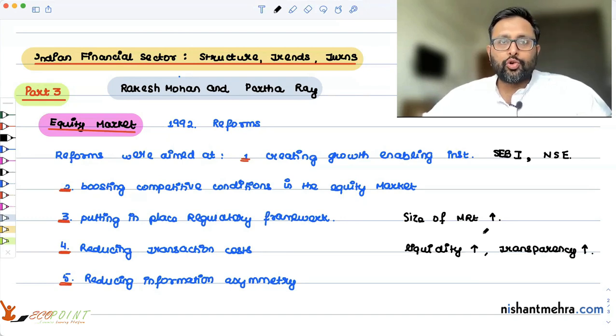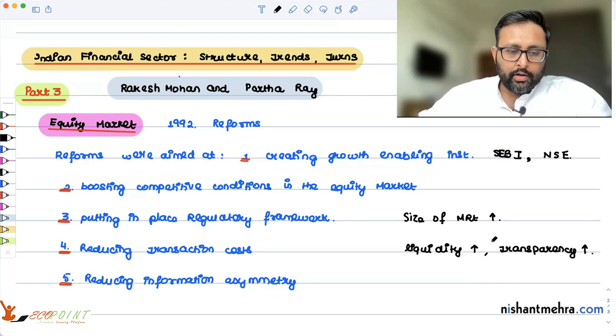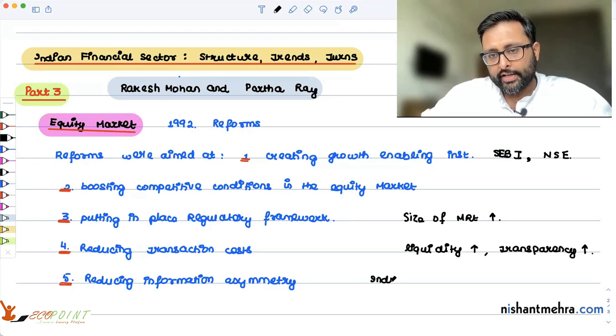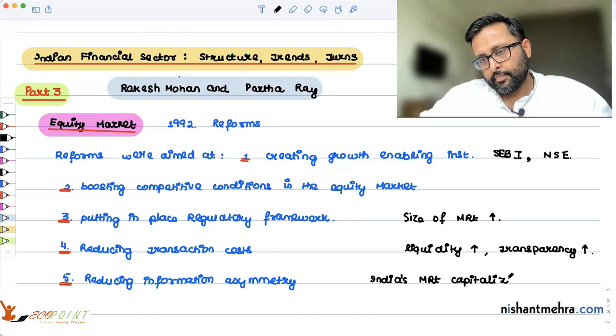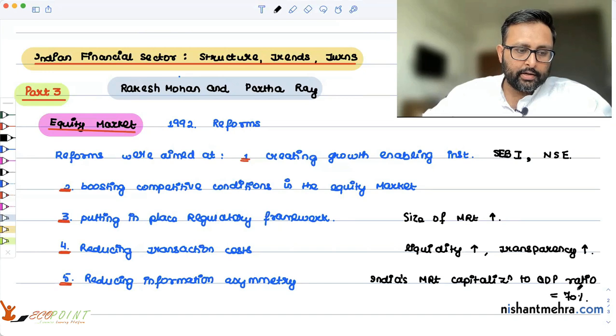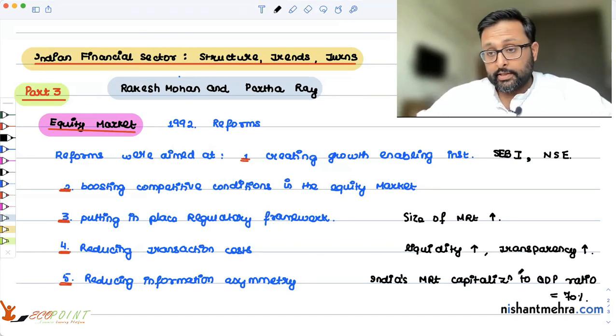There has to be some volatility, definitely. But there should not be swings which are very high and very low. That is what we call stability. India's market capitalization to GDP ratio is standing at nearly 70%, and this is in 2016.